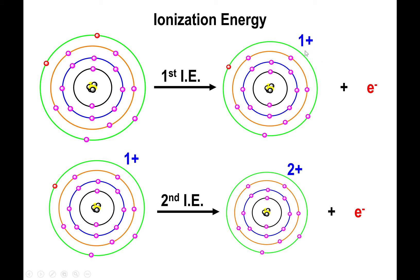So if the product has a plus one charge, the reactant has zero charge. If the product has a two plus charge, the reactant has a plus one charge. That's a concept you will need to keep in mind because we're going to use it in future lectures. First ionization energy yields the plus one cation, second ionization energy yields the two plus cation, and there's only a difference of plus one between reactant and product.